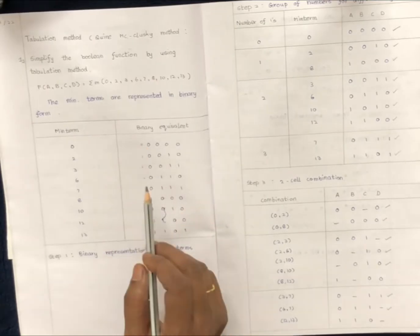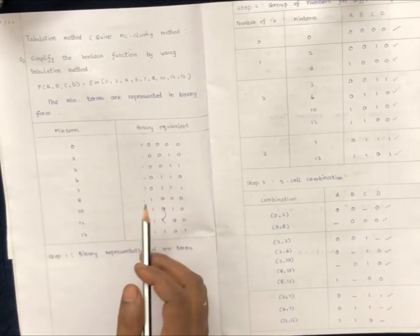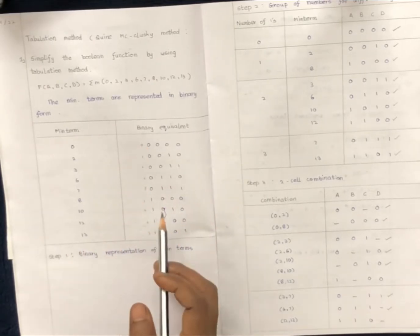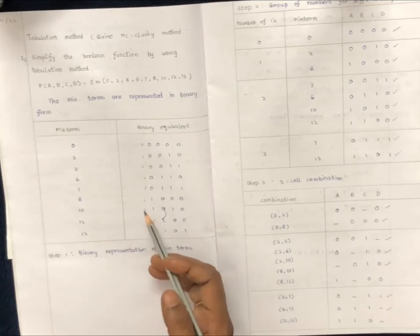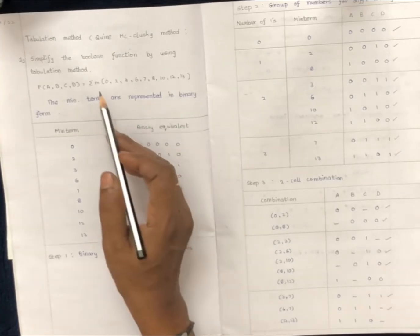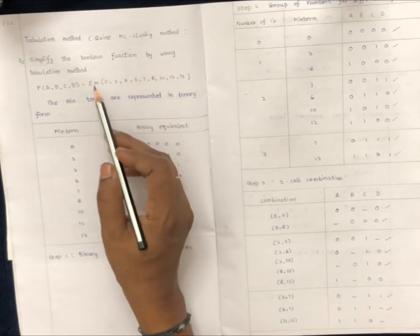The tabulation method is a most important question. Corner of map is a question, and tabulation method is a question. The first problem is to simplify the Boolean function by using the tabulation method.